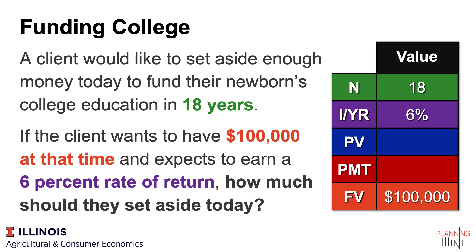We can say 0 is payment. It did not appear that the client would be adding regularly to this account, so we'll say 0 is payment. And what that leaves is how much they should set aside today — that's the great mystery. We're going to be solving for present value.